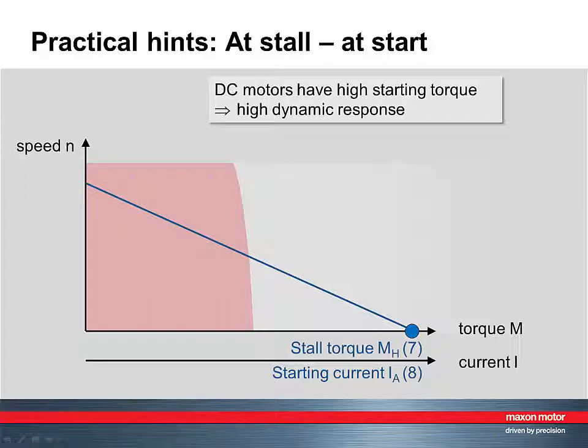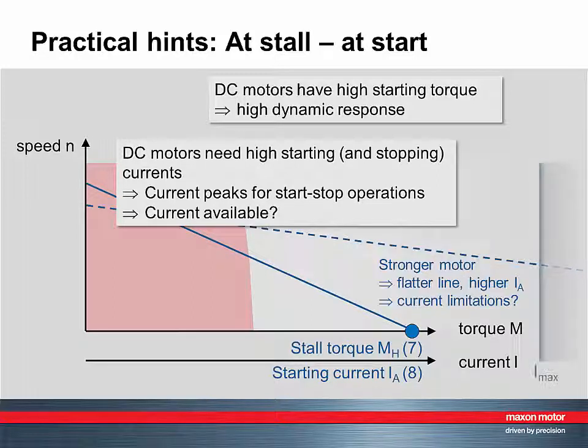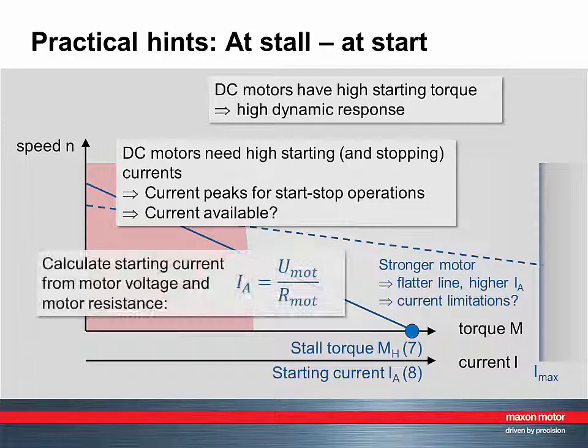Starting and stopping of DC motors need high currents. Often start-stop operation is associated with current peaks. The power supply and controller might have limited current capabilities that can restrict start-stop operation.